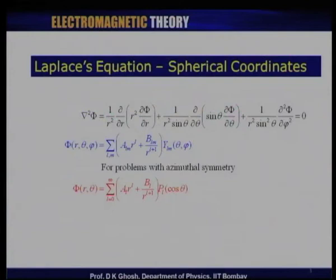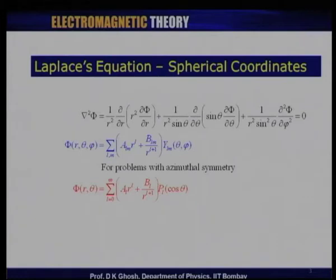We continue our discussion of solutions of Laplace equations. Last time, we had shown that the Laplace equation in spherical polar can be written as: 1 over r squared d by dr of r squared d phi by dr, plus 1 over r squared sin theta d over d theta of sin theta d phi by d theta, plus 1 over r squared sin squared theta d squared phi over d phi squared, equal to 0.